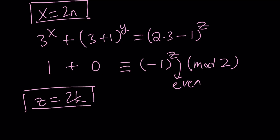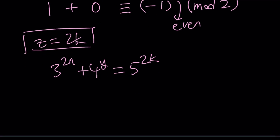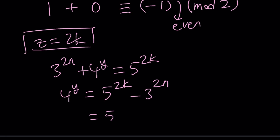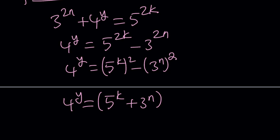So x and z are both even, which means we can write our expression as 3 to the power 2n plus 4 to the power y equals 5 to the power 2k. This is the most critical part, because if you isolate 4 to the y, we can factor the right-hand side using difference of two squares — since 5 to the 2k is (5 to the k) squared. Factoring gives us (5 to the k plus 3 to the n) times (5 to the k minus 3 to the n) equals 4 to the y.